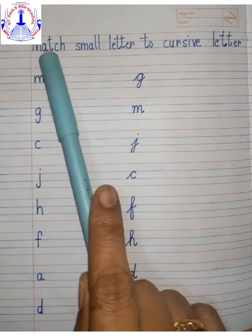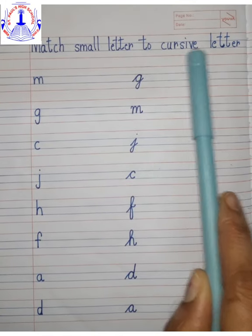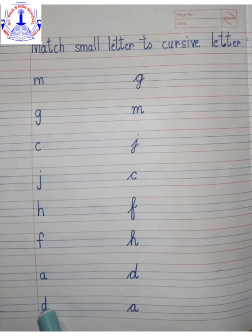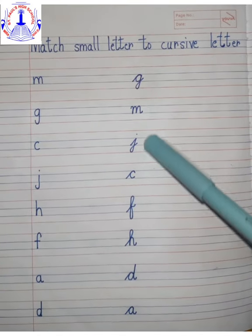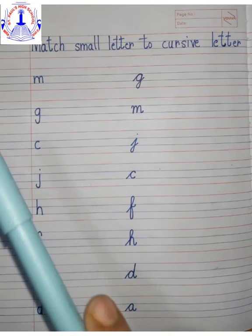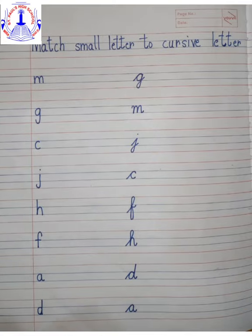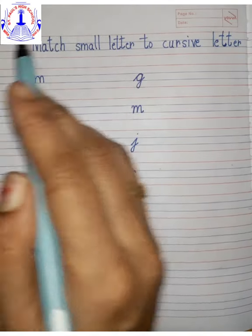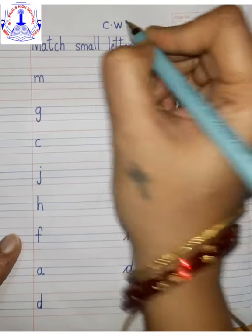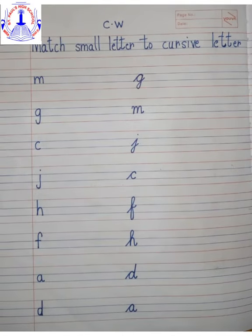Children, now we are going to match small letters to cursive letters. Here you can see all the small letters are given, and here all the cursive letters are given. So we are going to match letter to letter, from small letter to cursive letter. Write today's date over here and write C.W. Now let us start.